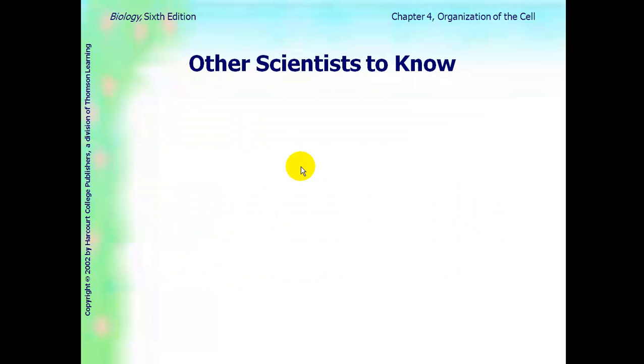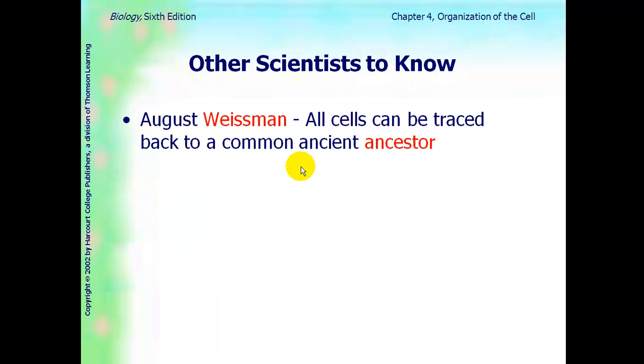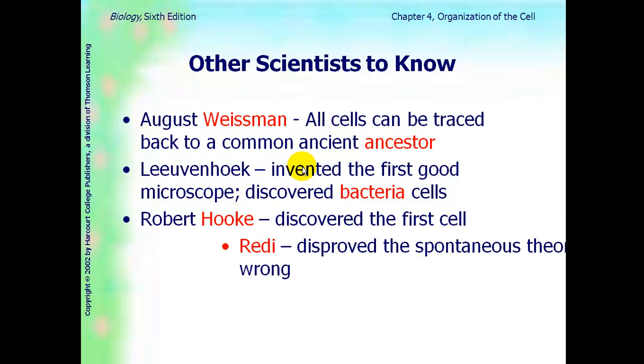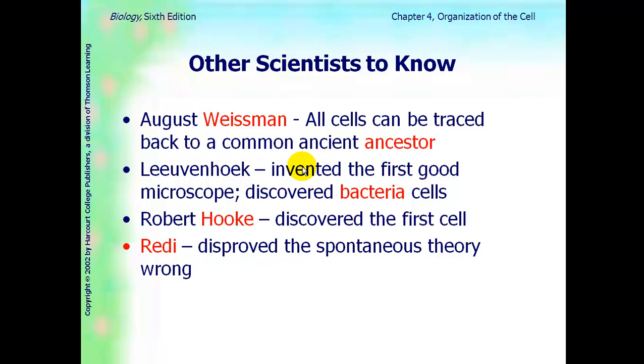There are other scientists that you need to know. Weissman, he found out that all cells can be traced back to a common ancestor. Levenhoek, he was a lens maker, invented the first good microscope, and he discovered that all bacteria are made of cells. Robert Hooke was the first one to see a cell through a microscope. And Francisco Reddy disproved the theory that life comes from non-living things. It was called the Spontaneous Generation Theory.